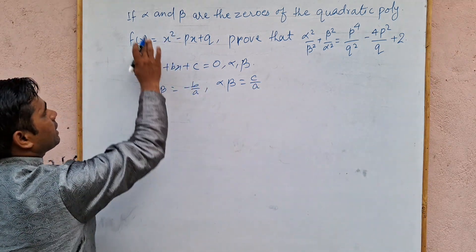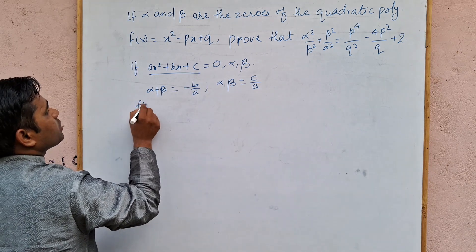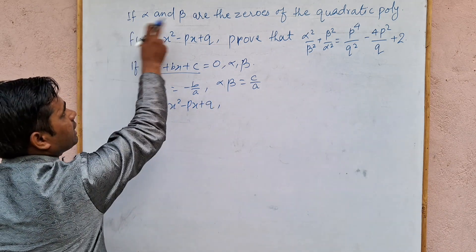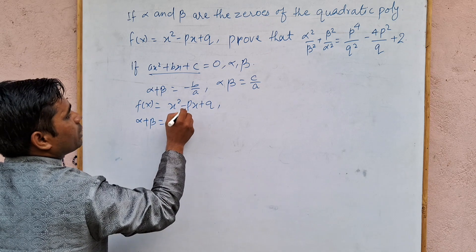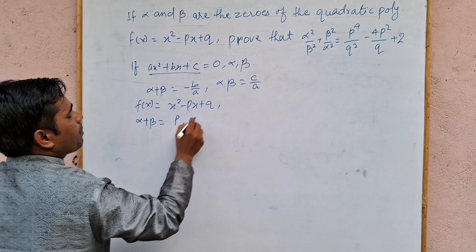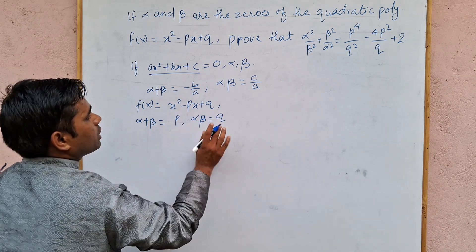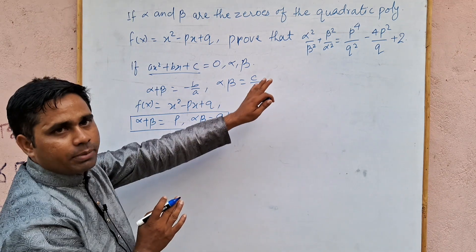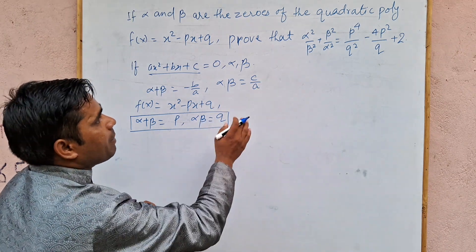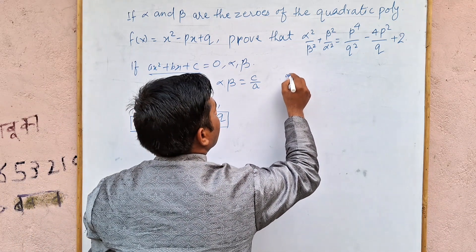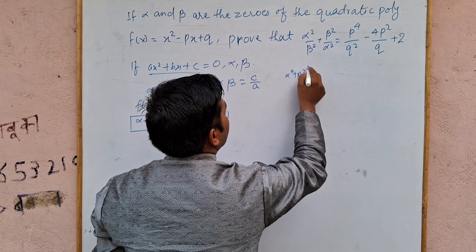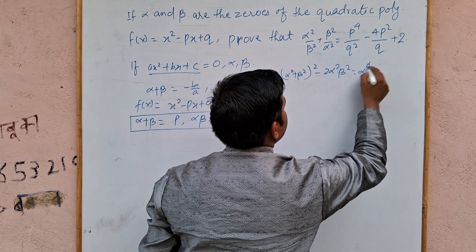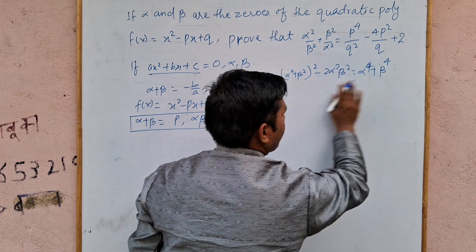Alpha plus beta is equal to minus b upon a and alpha into beta is equal to c upon a. Now we have to prove how to apply our identity and balance it. We have to prove our entire equation for this question.